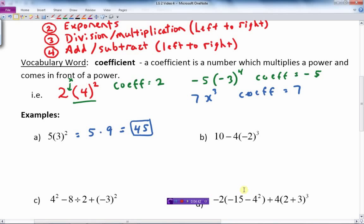This should not be brand new. The next one, there's a bracket inside with just a number, so I don't do anything with that. Now I need to do the exponent, and what is being cubed? The negative 2 is being cubed, so I put 10 minus 4 times negative 2 cubed.